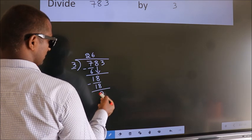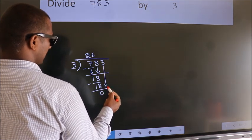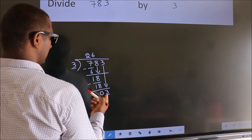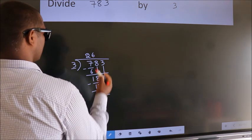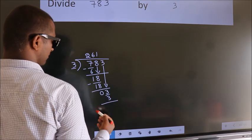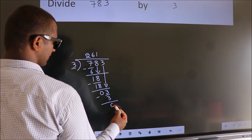After this, bring down the beside number. So 3 down. So 3. When do we get 3? In 3 table. 3 1s 3. Now we subtract. We get 0.